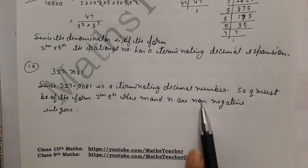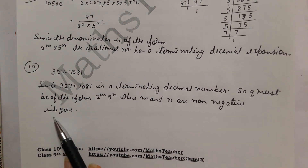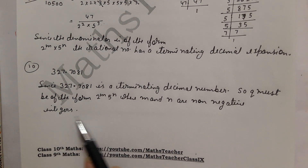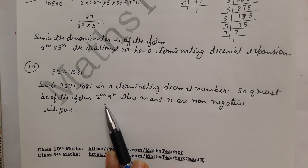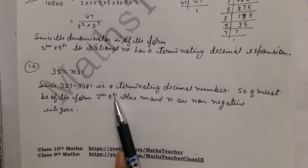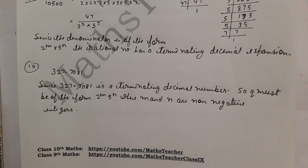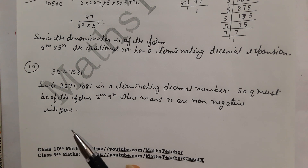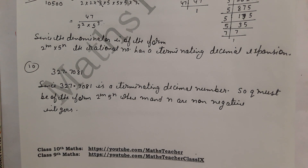Where M and N are non-negative integers. M and N can be 0, 1 — they can be whole numbers, but negative numbers are not allowed in the power. I hope you have understood this solution. If there is any doubt, please comment in the comment box. Thank you.